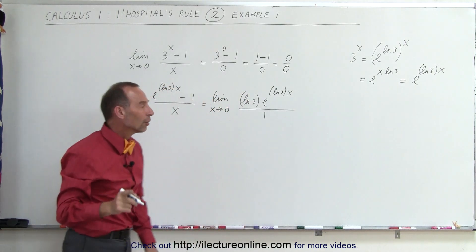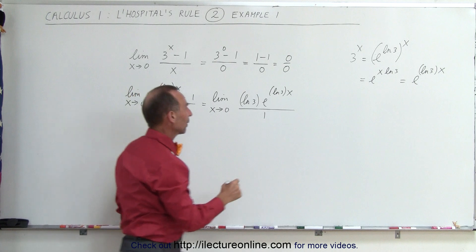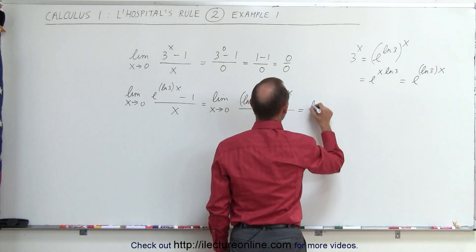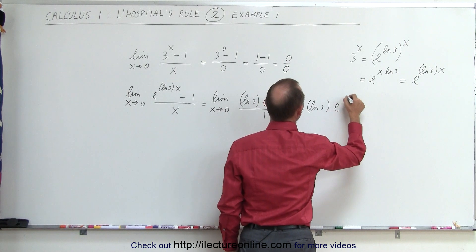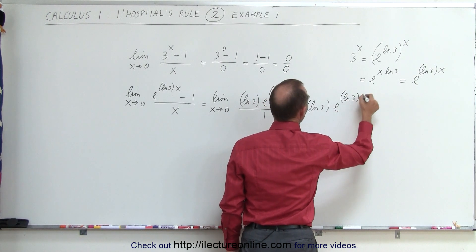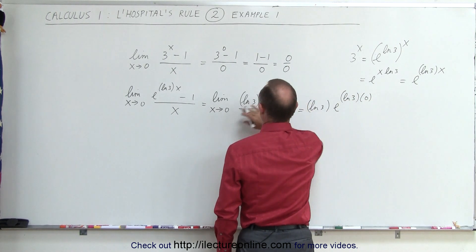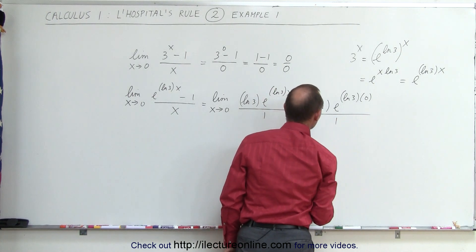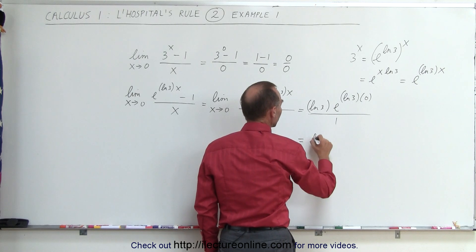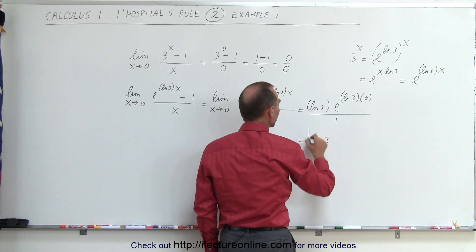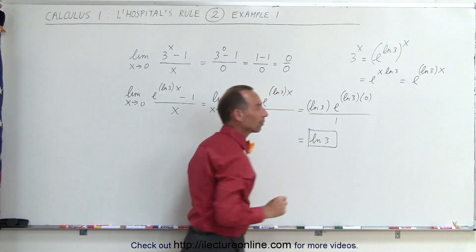I believe we can go ahead and apply the limit and see what happens. This would be equal to the natural log of 3 multiplied times e to the natural log of 3 times 0, divided by 1. Of course, e to the 0 is equal to 1. This becomes the natural log of 3 divided by 1, or simply the natural log of 3.